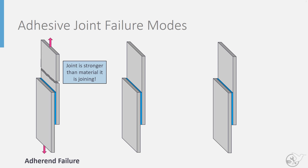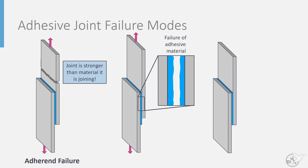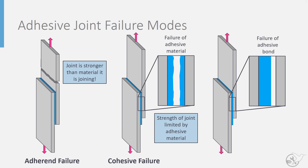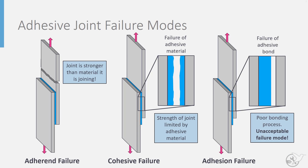If the load exceeds the strength of the adhesive, then the adhesive material can fail. This failure mode is typically referred to as cohesive failure, as the chemical bonds that hold the molecules together within the material are known as cohesive bonds, and it is these bonds that are overcome to cause the failure of the material. This failure mode is limited by the strength of the adhesive material. Conversely, if the chemical bonds that glue the adhesive material to the part being joined are overcome by the loading, failure can occur along the interface between the adhesive material and these parts. This failure mode is known as adhesive or adhesion failure, and is limited by the quality of the chemical bonds formed during the bonding process.